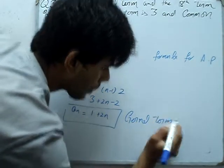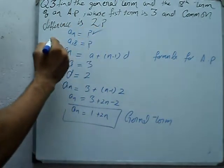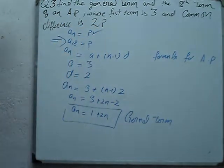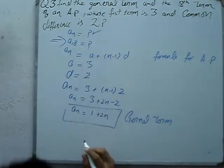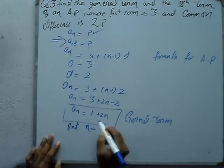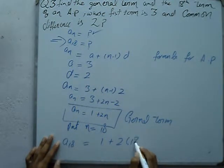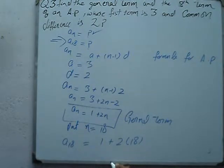Now we have found the general term. Next we need to find A18. Put n equals 18. A18 equals 1 plus 2 into 18, which equals 1 plus 36.